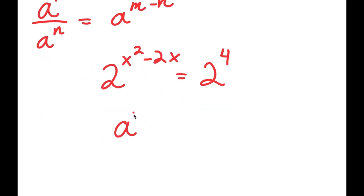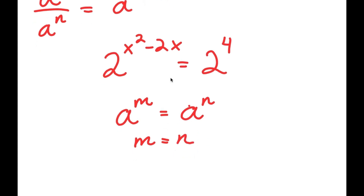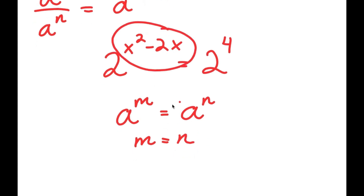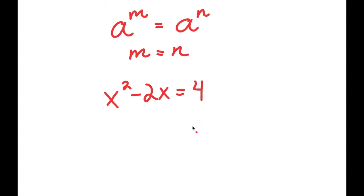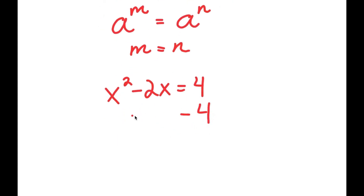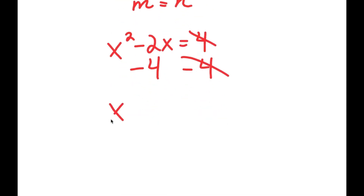Now, if I have something in the form a to the power of m is equal to a to the power of n, this means that m is equal to n. So in this case, m is x squared minus 2x and n is 4. So I get x squared minus 2x is equal to 4. And now if I subtract 4 on both sides, these two cancel out and I get x squared minus 2x minus 4 is equal to 0.